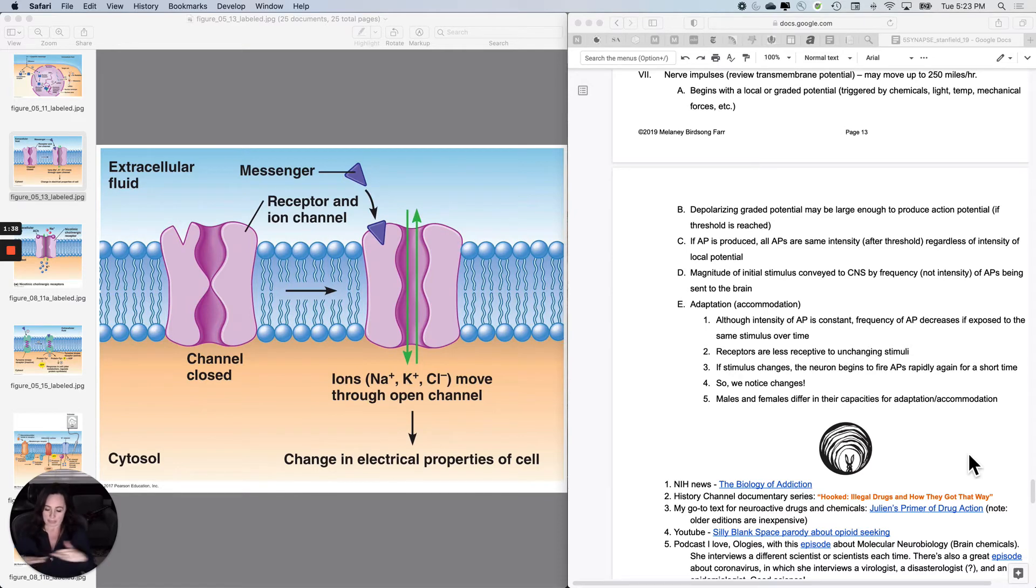So if you're exposed to the same stimulus over a long period of time and it's not one of those categories, typically speaking what happens is the receptors become less receptive to an unchanging stimulus. So like that hum of the air conditioner or the feel of my clothes, it's not as if I don't know that they're there, but I'm not spending much ATP on them.